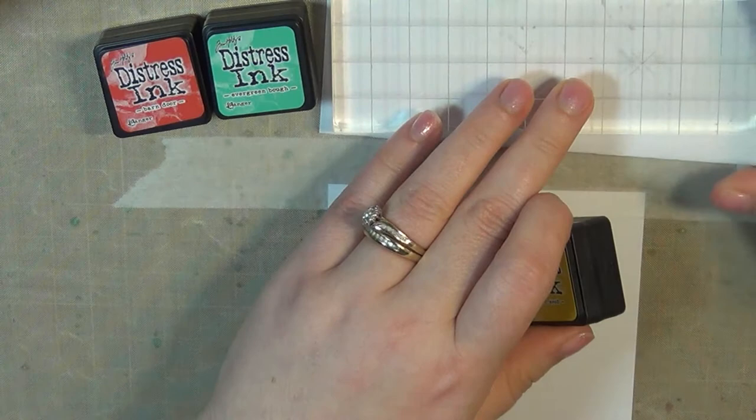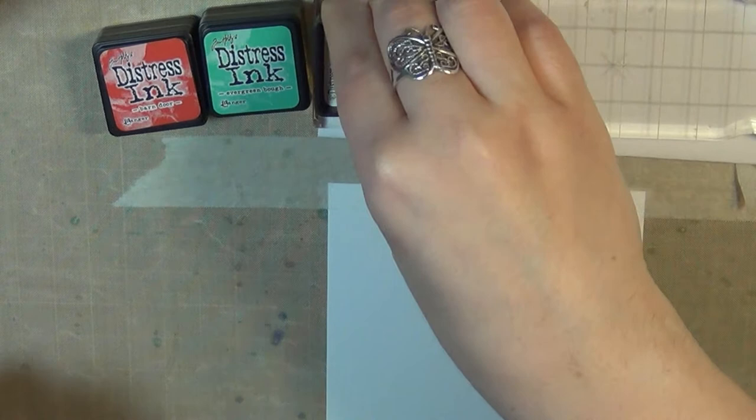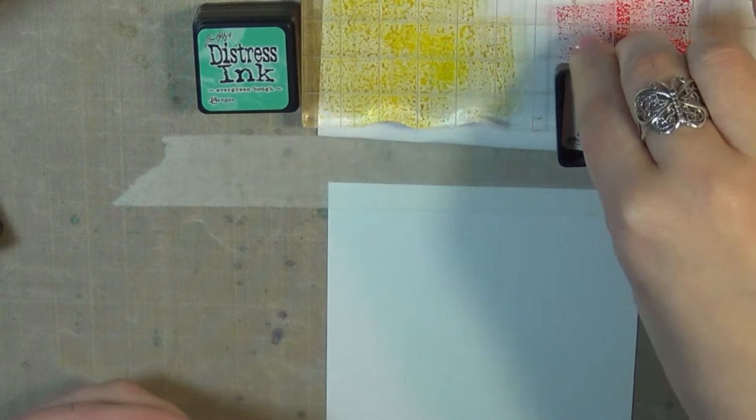I've got a piece of Tim Holtz watercolor paper here and a piece of regular typing paper folded in half underneath my acrylic block. I'm using the acrylic block as my little palette, but I put the paper underneath so you could see the color better on camera.